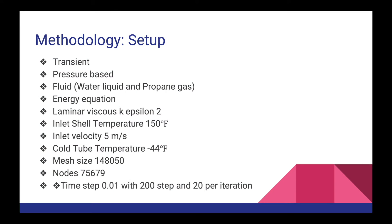In our setup we used transient pressure-based solver. The fluid for the shell was water liquid, and for the tube it was propane gas, with the energy equation activated and a k-epsilon viscous model. The inlet temperature was 150 degrees Fahrenheit and the inlet velocity was 5 meters per second. For the tube, the temperature was negative 44 degrees Fahrenheit. The mesh size was 148,000 elements and 75,679 nodes. We used a time step of 0.01 with 200 steps and 20 iterations per step.